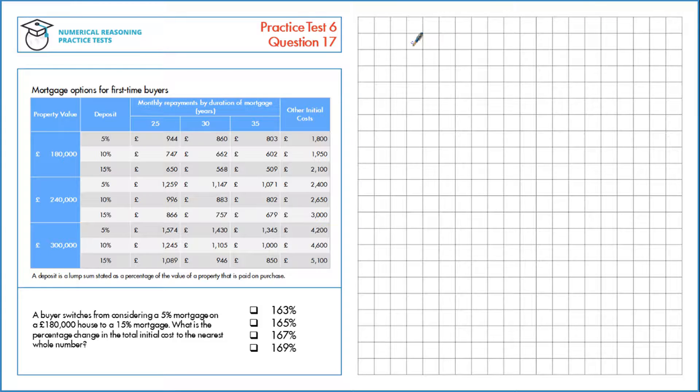A buyer switches from considering a 5% mortgage on a £180,000 house to a 15% mortgage. So we're looking here, and we're looking at 5% and 15%. What is the percentage change in the total initial cost to the nearest whole number?